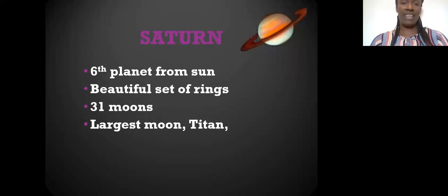Then we have Saturn, the sixth planet from the Sun. It is the diva planet because of its beautiful set of rings. It has 31 moons, the largest moon Titan.